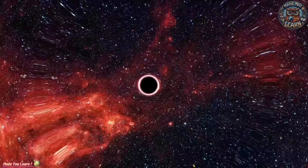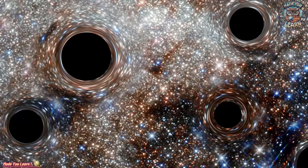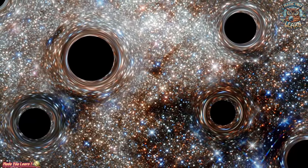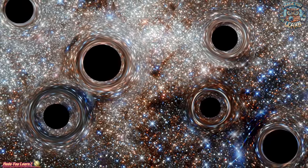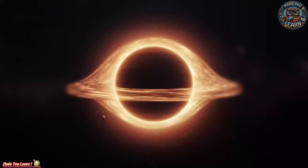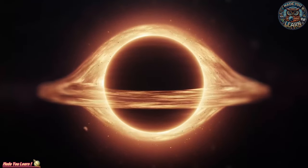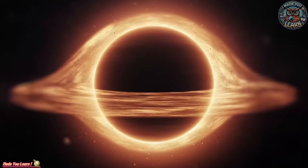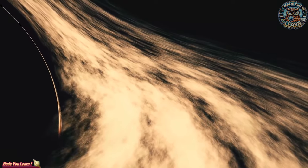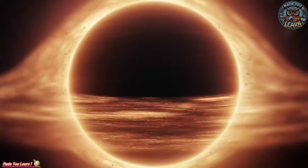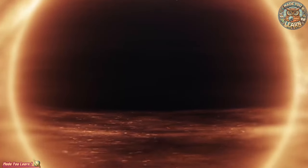The genesis of a black hole is a tale of stellar evolution and cosmic demise. When a massive star, much larger than our sun, exhausts its nuclear fuel, it undergoes a catastrophic collapse under its own gravity. This collapse can result in a supernova, a stellar explosion that outshines entire galaxies. What remains can be so dense and compact that it forms a black hole, a point in space where the gravitational pull is so intense that nothing, not even particles and electromagnetic radiation such as light, can escape from it.